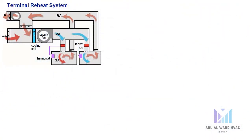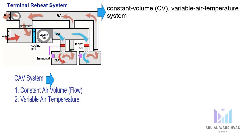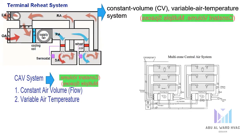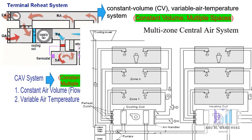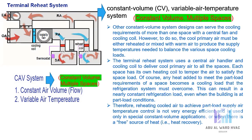Next we have the terminal reheat system, which is the same as a normal CAV except that it can serve multiple spaces with constant volume. This system design can serve the cooling requirements of more than one space with a central fan and cooling coil. However, to do so the cool primary air must be either reheated or mixed with warm air to produce the supply temperatures needed to balance the various space cooling loads. The terminal reheat system uses a central air handler and cooling coil to deliver cool primary air to all spaces, and each space has its own heating coil to temper the air.